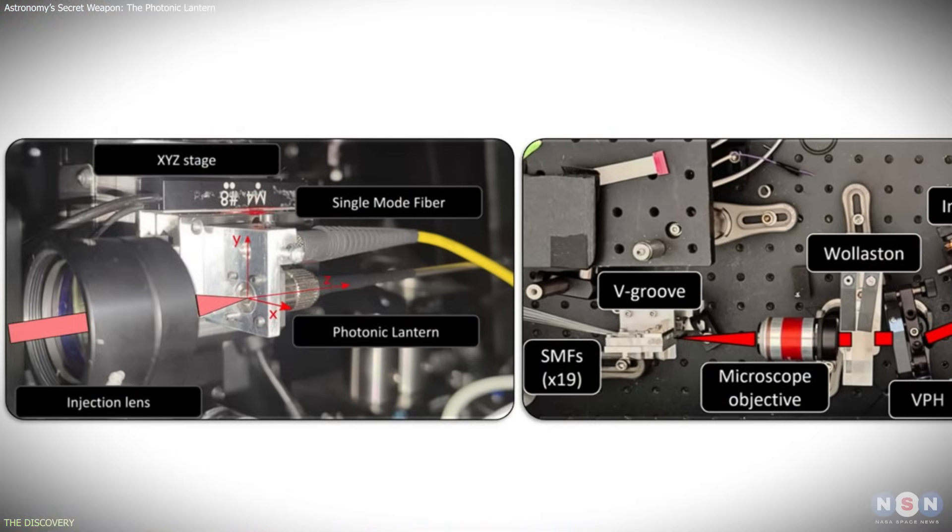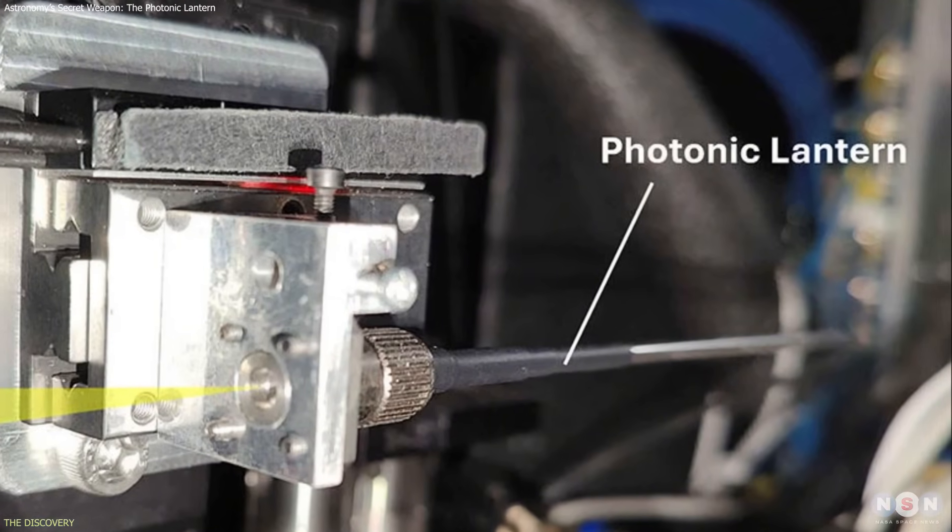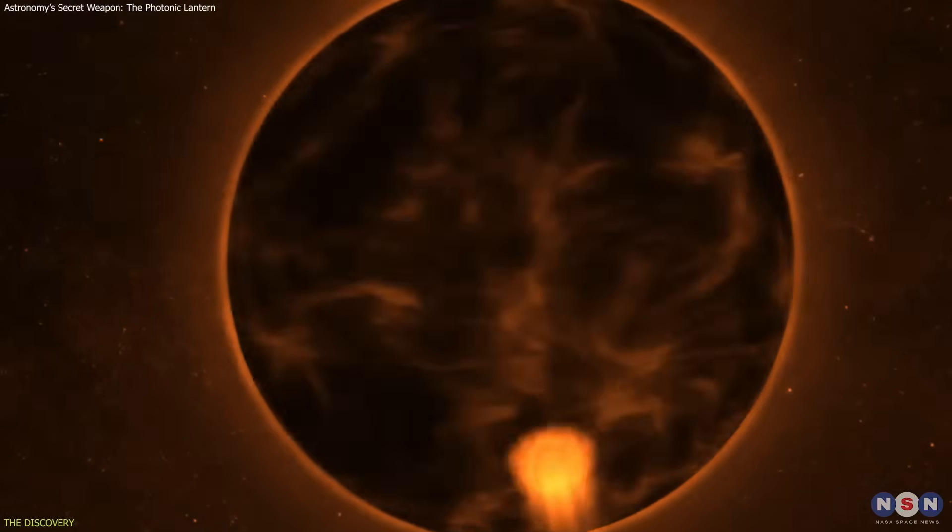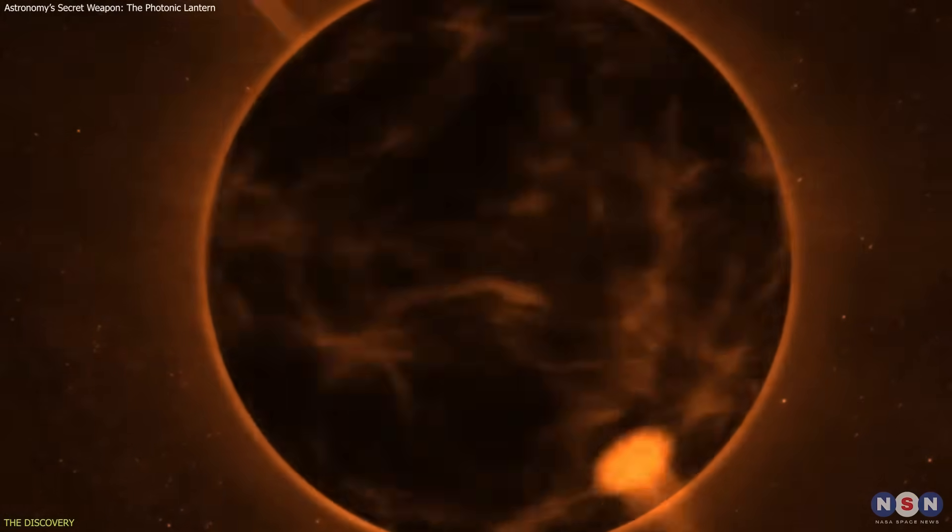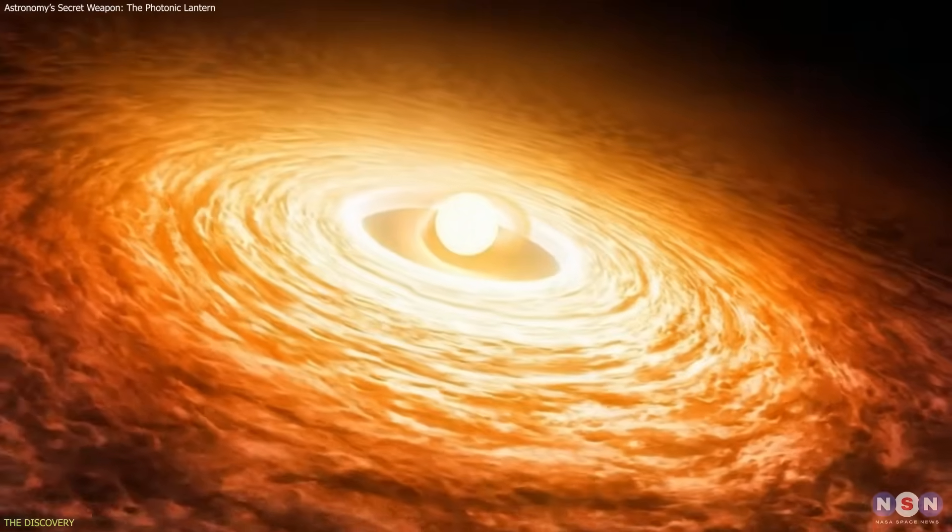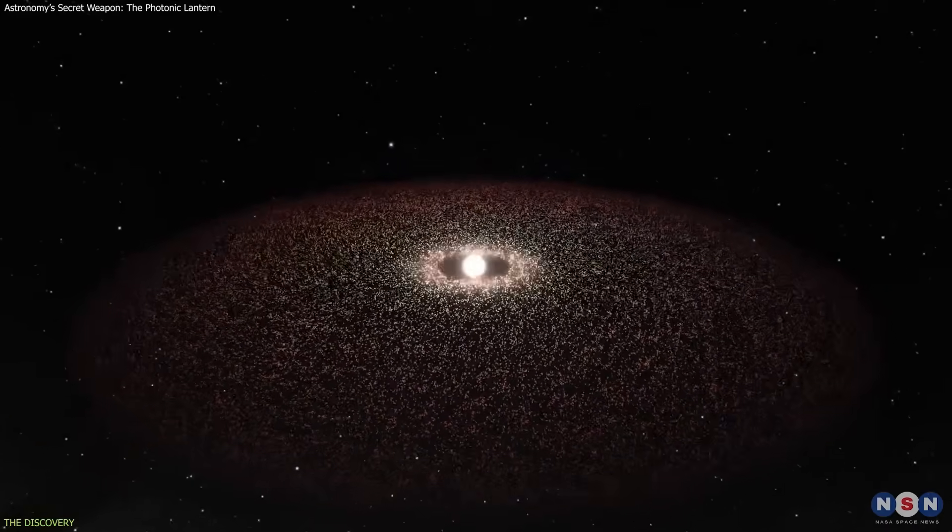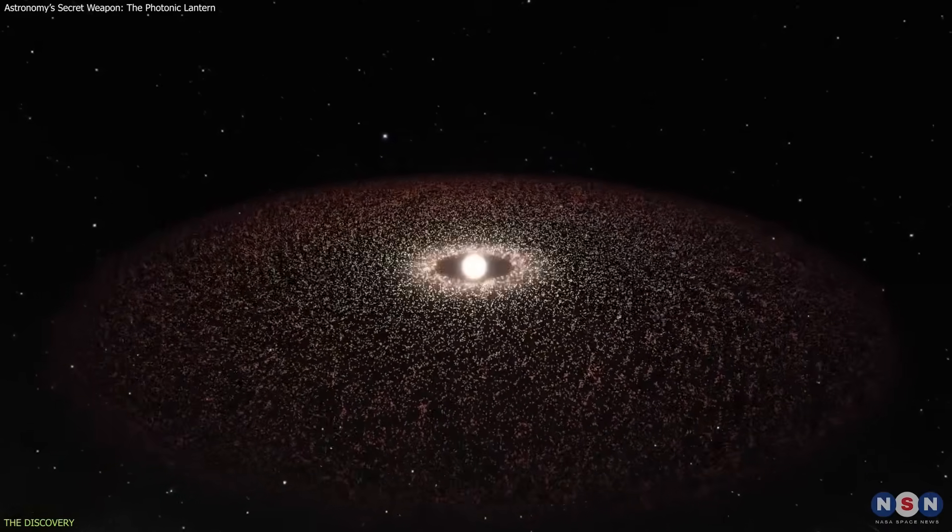To put the device to the test, the team mounted it on Subaru's first PL instrument and targeted Beta Canis Minoris, a fast-rotating star about 162 light-years away. It's surrounded by a thin disk of hydrogen gas, making it ideal for assessing how well the new system can resolve delicate features.